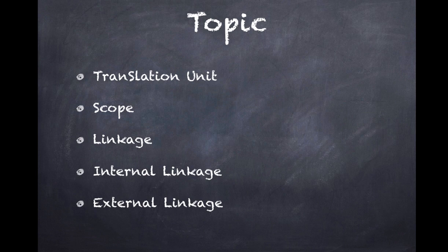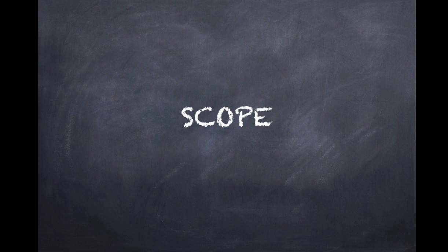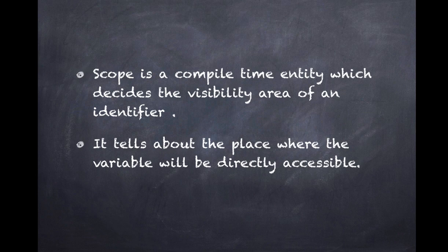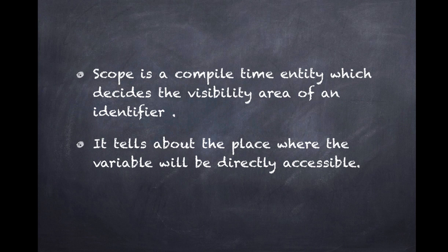Today we'll be covering the translation unit, scope, and linkage — including internal linkage and external linkage. So what is scope? Scope is nothing but the visibility of an identifier — it tells about the accessibility area of a variable. Suppose we have two identifiers: one is 'a' and another is 'b'. 'a' is a local variable and 'b' is a global variable.